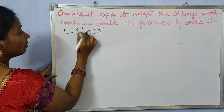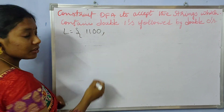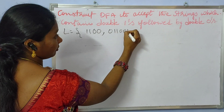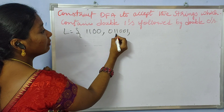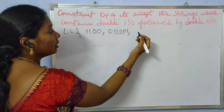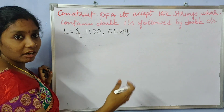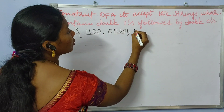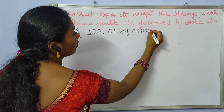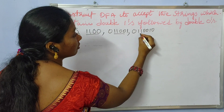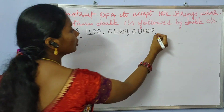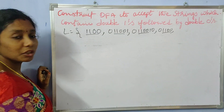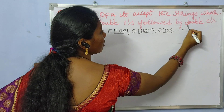What is the language for that? The minimal string is 1100. Every string should have the sequence 1100 in it — here also we are having 1100, and so on.